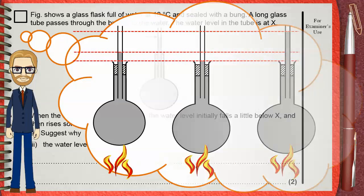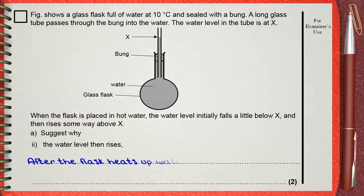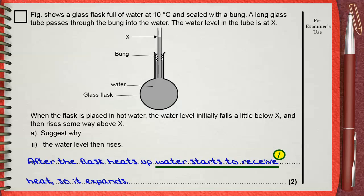That's why the water level will rise even above the initial level of the water in the first diagram. So, we can say, after the flask heats up, water starts to receive heat, so it expands. One mark for that water starts to receive heat and the second mark for water will expand.